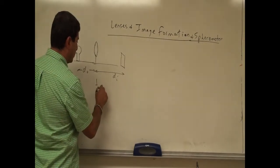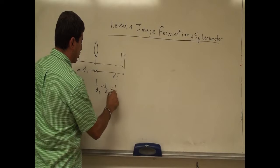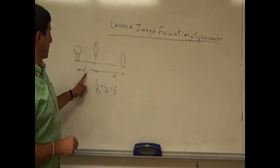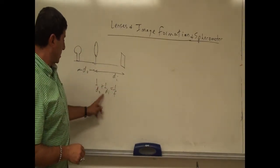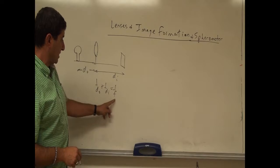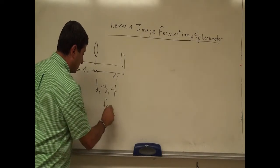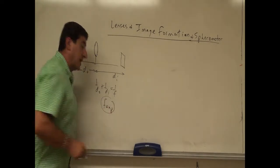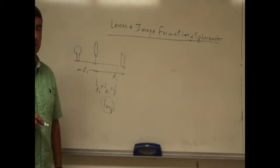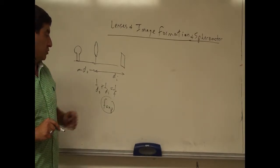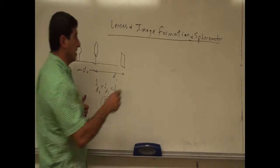1 over DO plus 1 over DI is equal to 1 over the focal length. Once I get my DO and DI, I can put these in and calculate the experimental focal length. Then I can compare that to the focal length I get from the lensmaker's equation.